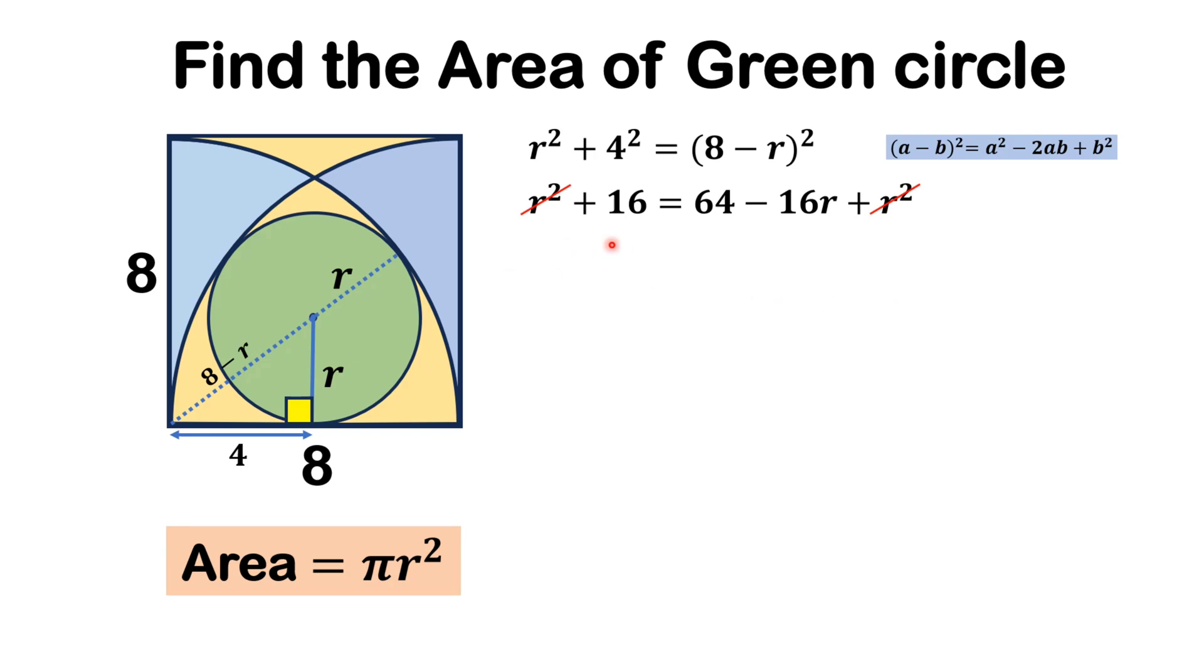So, this r² will be cancelled out with this r², and we will take this minus 16r to the left, and 16 to the right, we will get 16r = 48.